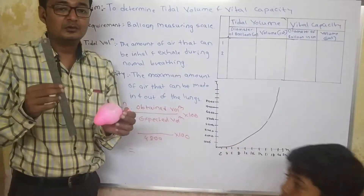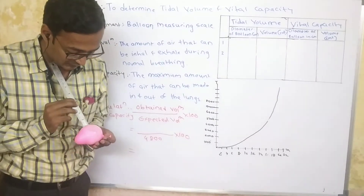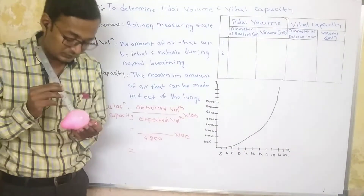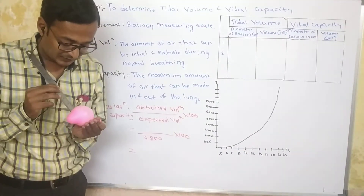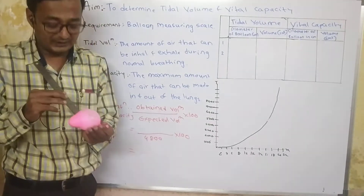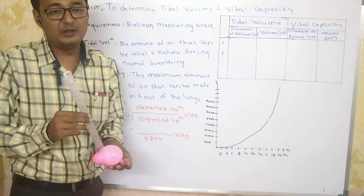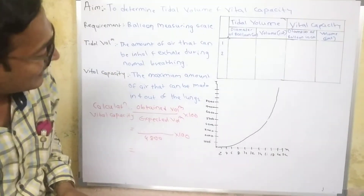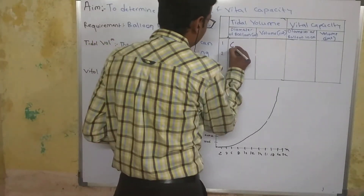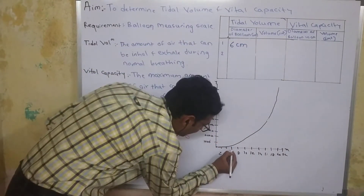This has been blown with quite normal respiration. The approximate diameter of this balloon is about 6 cm. We will note it down — that is 6 cm — and mark it here.